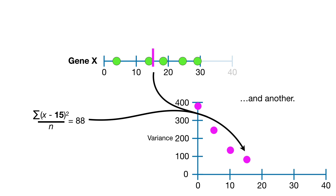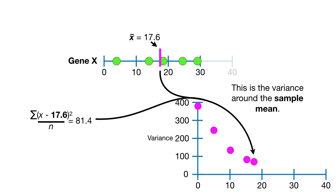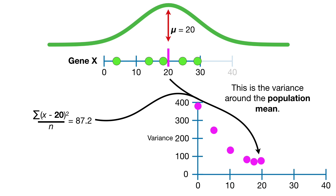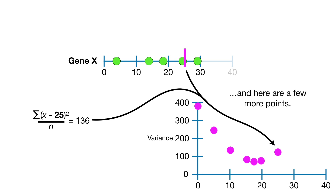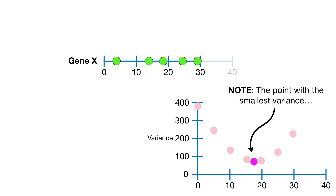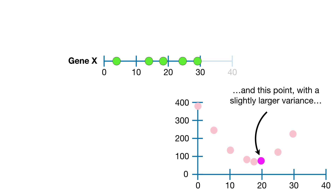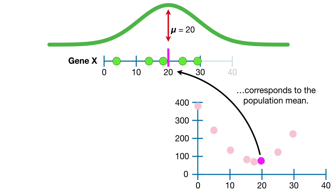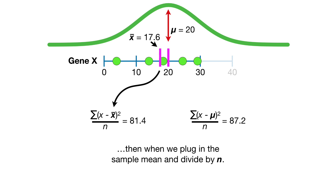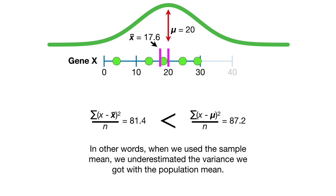Here are a few more points. This is the variance around the sample mean — remember, right now we are dividing by n, not n minus 1. This is the variance around the population mean, and here are a few more points. Bam! Note: the point with the smallest variance corresponds to the sample mean x-bar, and this point, with a slightly larger variance, corresponds to the population mean. So in this case, when we plug in the population mean and divide by n, we get a larger variance than when we plug in the sample mean and divide by n. In other words, when we use the sample mean, we underestimated the variance we got with the population mean. Bam!